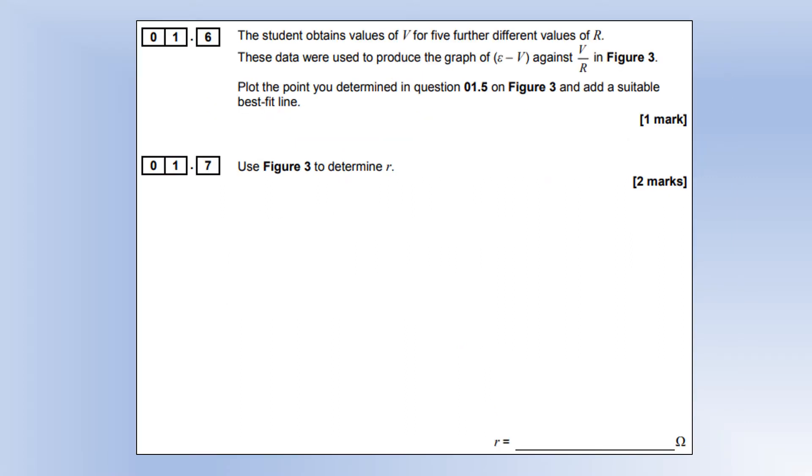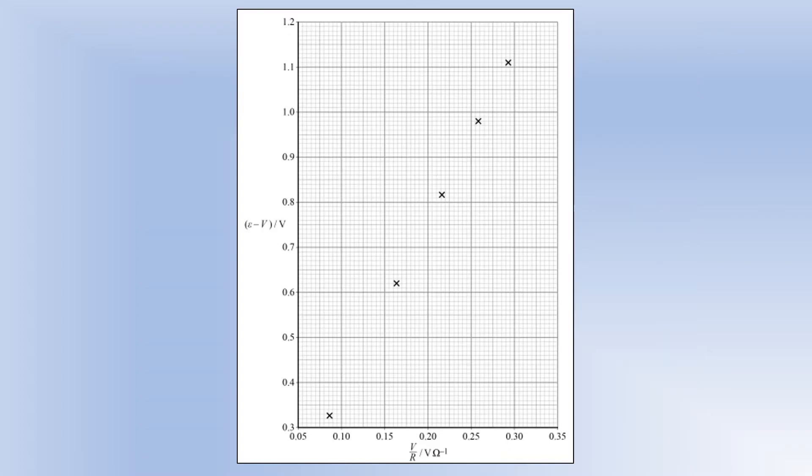The student obtains further values of V for different values of R. Now we've plotted a graph of the EMF minus terminal voltage on the Y axis and the terminal voltage over external resistance on the X axis. So what we're going to do is add our point to the graph. It goes in about there. We draw a best fit line, so I reckon the best fit line goes in about there.